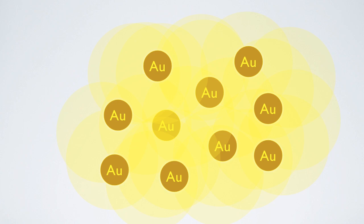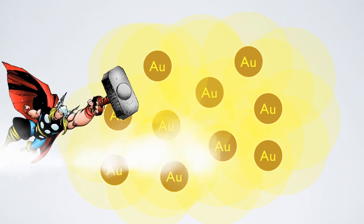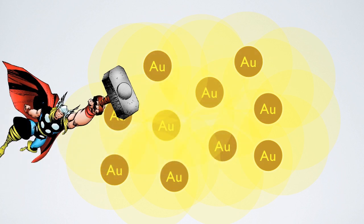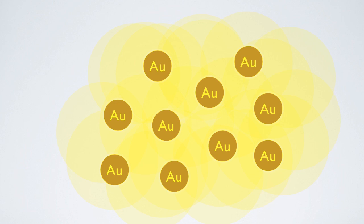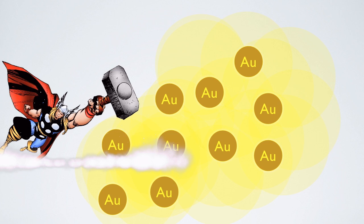Here we have gold, and here we have Thor. Now gold, like all metals, will not just simply break when we hit it. Instead, the gold will deform upon impact, or bend a little bit.